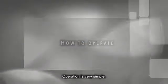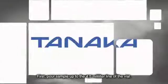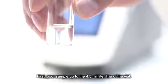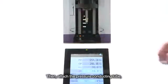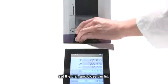Operation is very simple. First, pour sample up to the 4.5 milliliter line of the vial. Then, attach the pressure conducting tube, set the vial and close the lid.